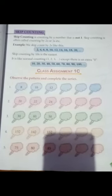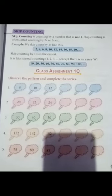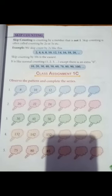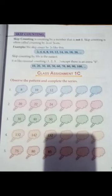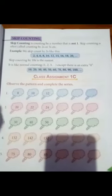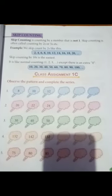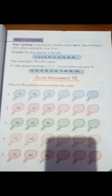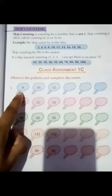So this is a simple way to find out the numbers. Skip counting means there is a difference between the numbers. Now let's look at the class assignment. The first number is 8, then 10, then 12.